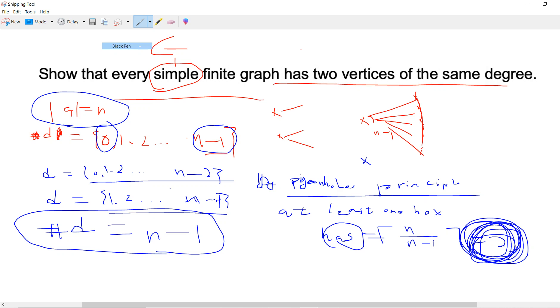So for some box, there will be some vertices v1 and v2, and they have the same degree.